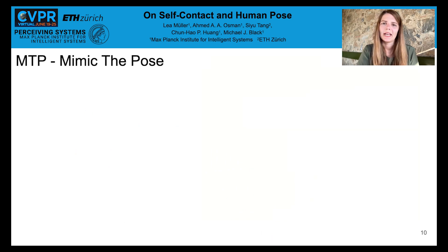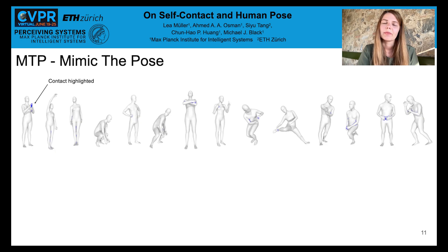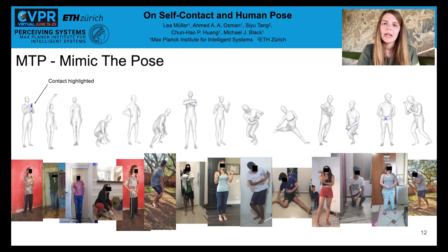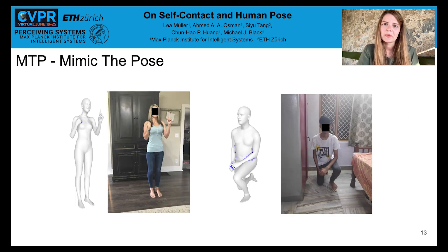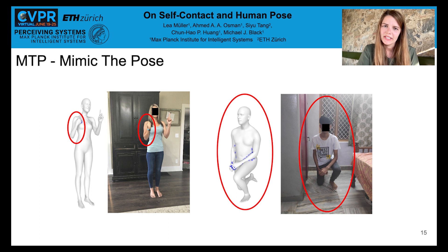To collect in-the-wild images, we render the meshes from 3DCP and highlight the contact area. Then we ask workers on Amazon Mechanical Turk to mimic these poses. Although the presented and the mimicked poses are quite similar, they don't match perfectly — for example, look at the hand position or the global orientation here.